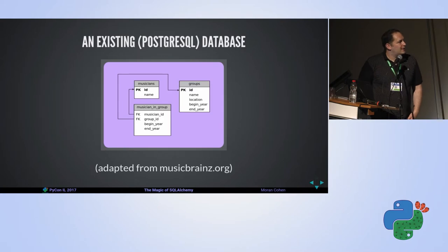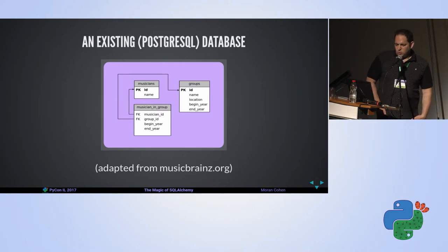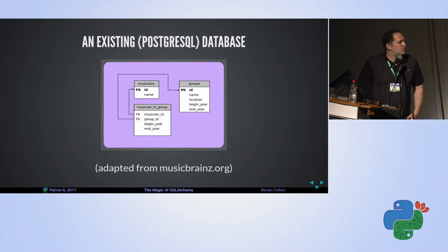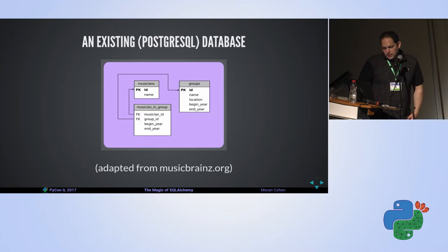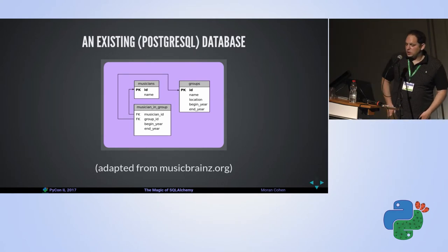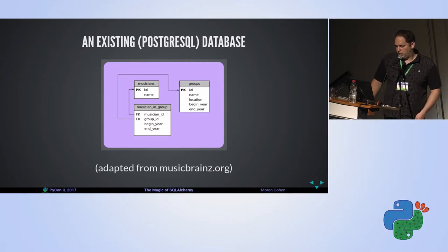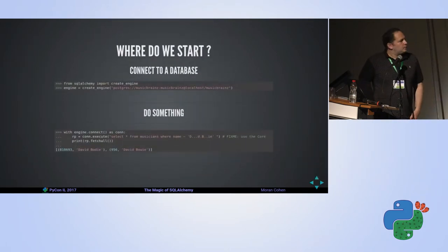Let's take a toy example of a database. This database will contain musicians and groups. Musicians will have a name, and groups will have a name, a location, the year formed, and an end year — set if the group was disbanded. We also have a relation — musician_in_group — which says a certain musician was part of a group between certain years. So if a musician left and then rejoined, we'd have two entries. This is a small toy example of a database.